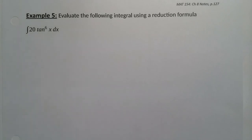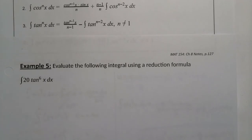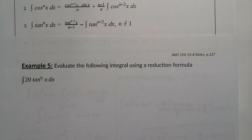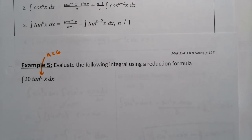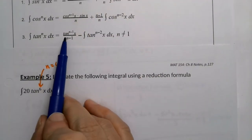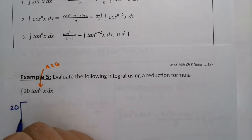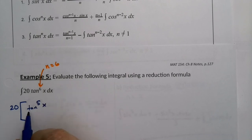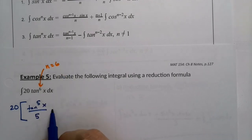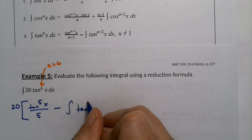We'll use rule number three for tangent to the sixth power. There's also a factor of 20 out in front of the whole thing. With n equal to 6, the formula says: subtract one from the power, giving tangent to the fifth over 6 minus 1, which is 5, minus the integral of tangent to the n minus 2, which is tangent to the fourth of x dx.